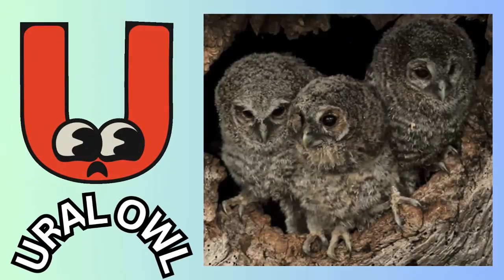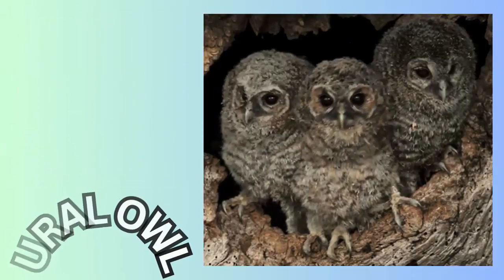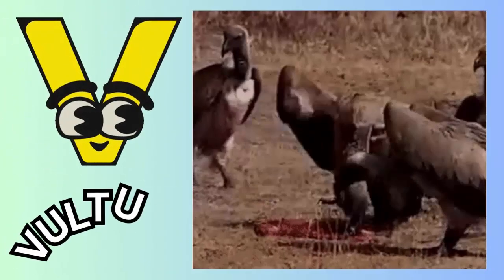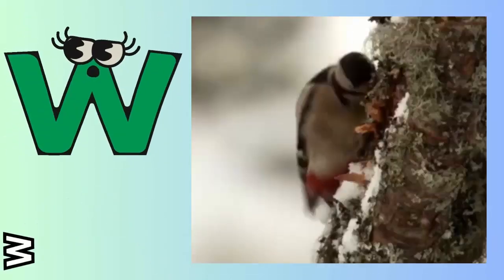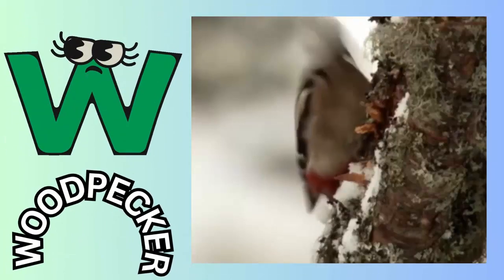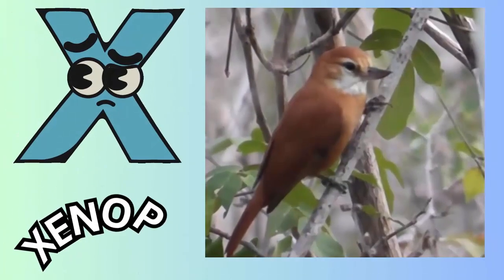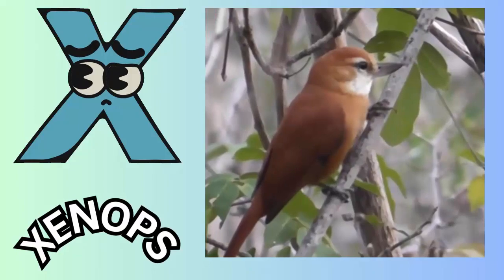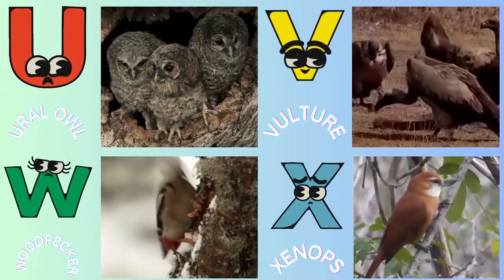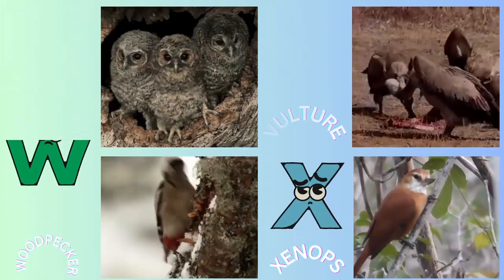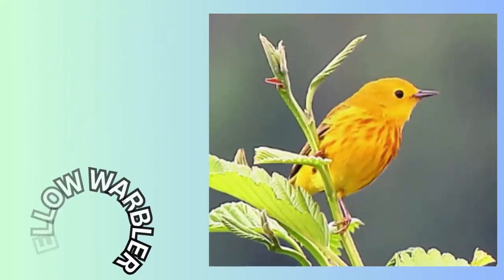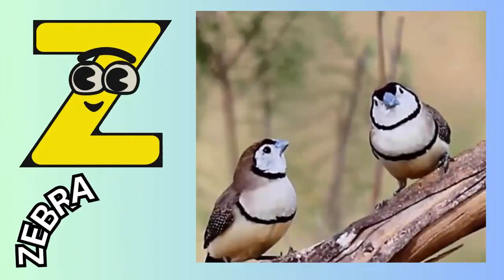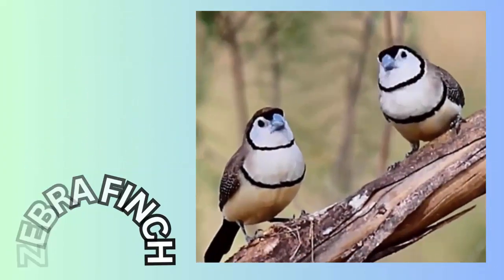U. U for ural owl. V. V for vulture. W. W for woodpecker. X. X for xenops. Y. Y for yellow warbler. Z. Z for zebra finch.